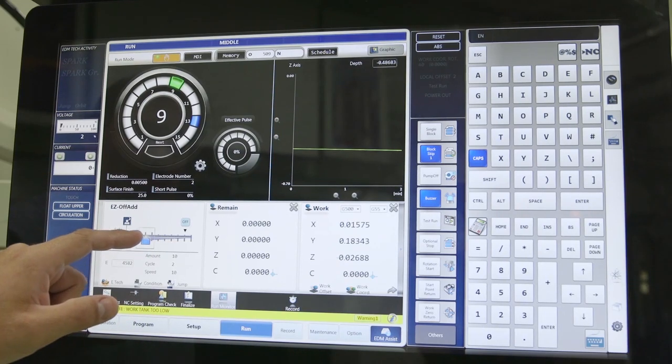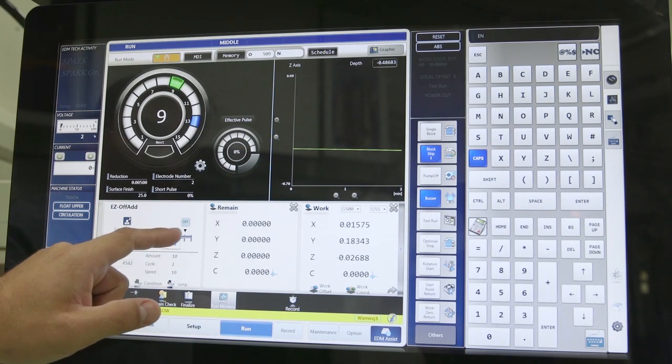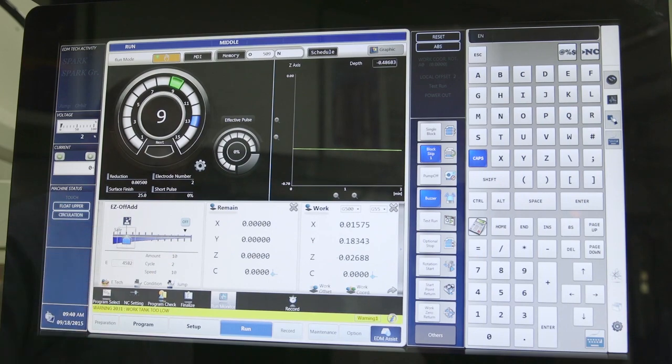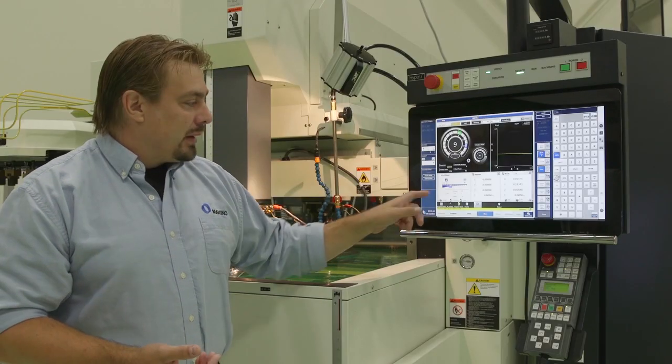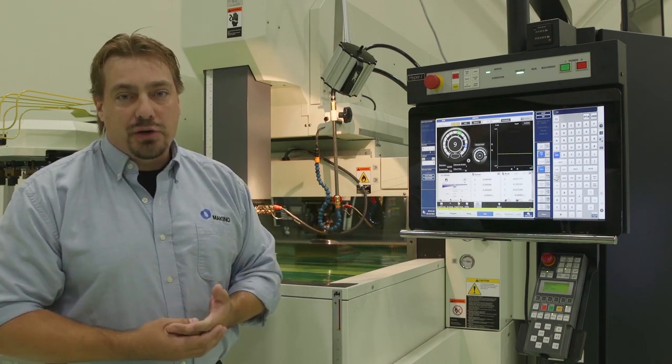Again, this is a slider bar that's going to change several E-code machining parameter settings. And what's nice here is an operator of any skill level can easily take advantage of this convenient function.